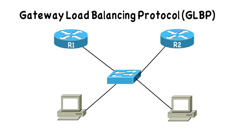We get load balancing automatically with GLBP. With GLBP, we can have all of our routers forwarding traffic without the need to go in and say this VLAN uses this router and this VLAN uses that router.